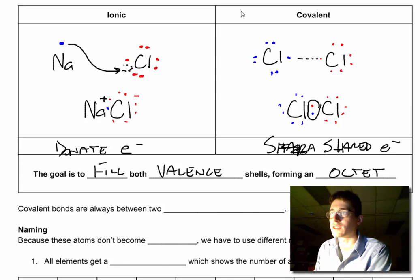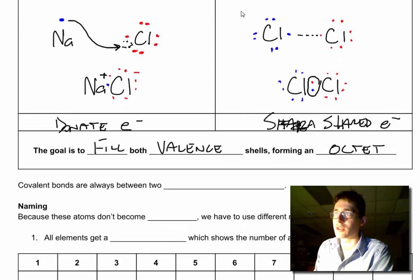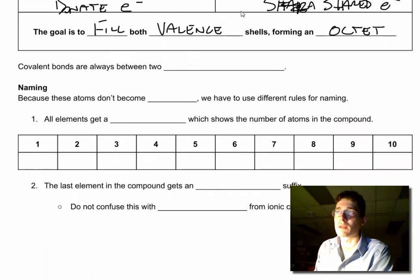This chlorine has got two, four, six, eight around it on the left, and two, four, six, eight around the chlorine on the right. The other example is like when you pass a pencil back and forth in class. You are equally using that pencil, sharing it between you two, each benefiting from it.